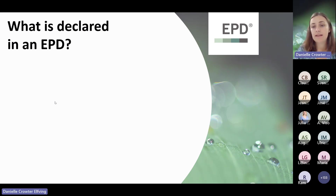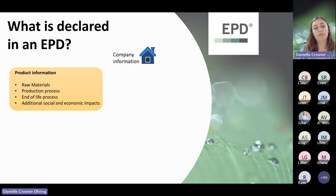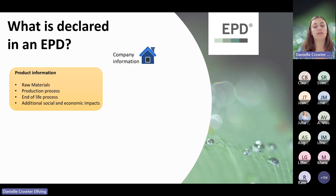Just a bit about what can be found in an EPD. First of all, you can always find information about the product owner — the company who owns the EPD. Secondly, you'll have product information, such as what are the inputs and raw materials that go into the product, how the product is produced, which electricity is used, what transportation methods are used, and so on. Also, the end-of-life process is declared — the end-of-life scenarios, such as if the product is recycled or if it goes to landfill. And then additional information, such as social and economic impacts, can also be included.